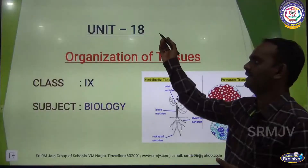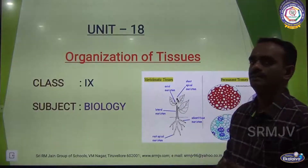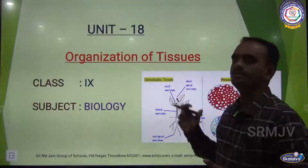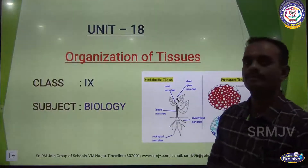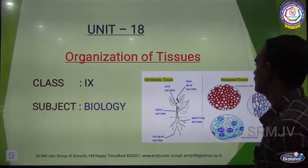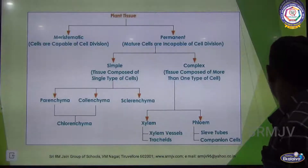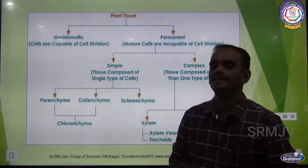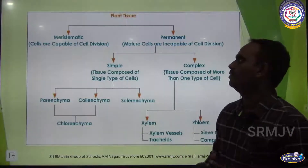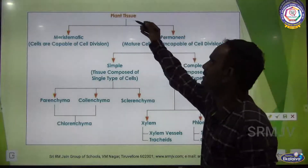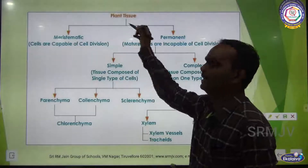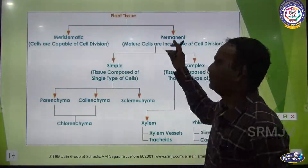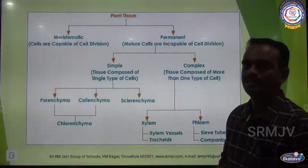In Unit 18, the name of the unit is Organization of Tissues. In the previous class, we discussed about plant tissue — it is broadly classified into meristematic tissue and permanent tissue.